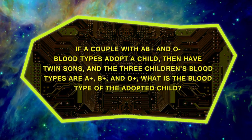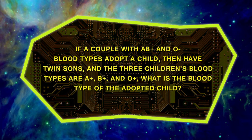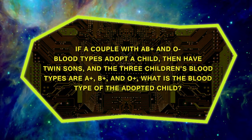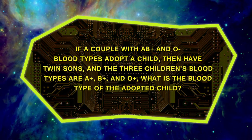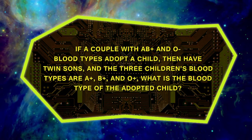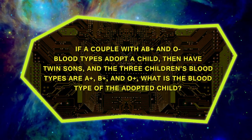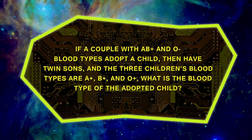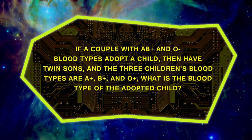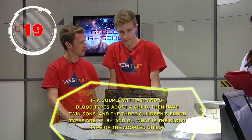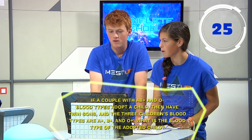If a couple with AB positive and O negative blood types adopt a child and then have twin sons, and the three children's blood types are A positive, B positive, and O positive, what is the blood type of the adopted child? Blue team answers O positive. Correct.